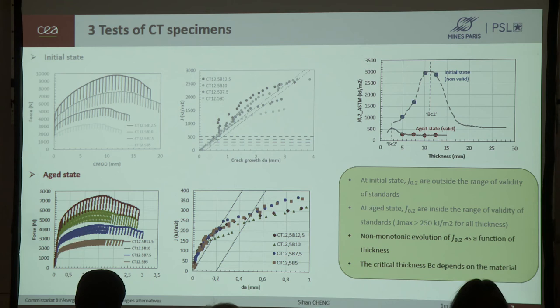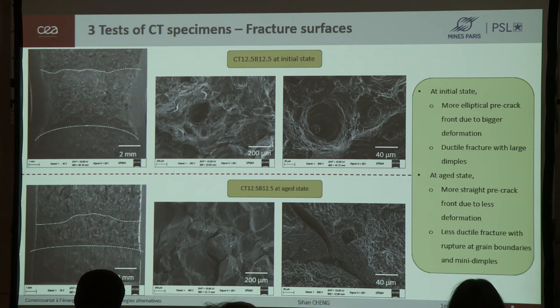In this page, we can see some fracture photos of CT12.5 with nominal thickness. The first line are initial states and the second line are aged states. Globally, at initial states, the deformation is bigger. Then we have pre-crack front more elliptical. If we look at the details, there are many large dimples with some particulates. So, at initial stage, we have a typical ductile fracture. At aged states, as the deformation is less, we have more straight pre-crack front. The fracture occurs mainly at grain boundaries with many mini dimples. So, from the fracture photos, we can see also the reduction of fracture toughness after aging.